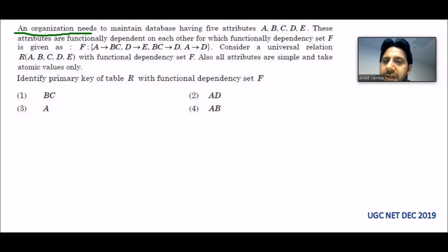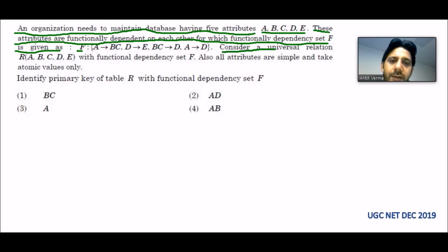An organization needs to maintain a database having five attributes A, B, C, D, E. These attributes are functionally dependent on each other, for which a functional dependency set F is given. F is the functional dependency set they are giving us.